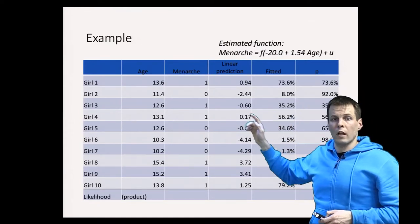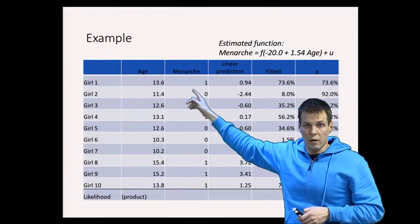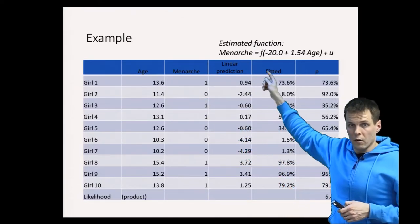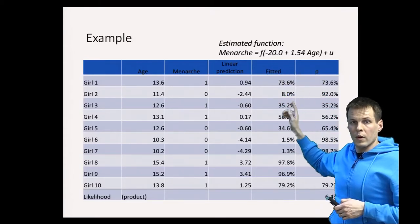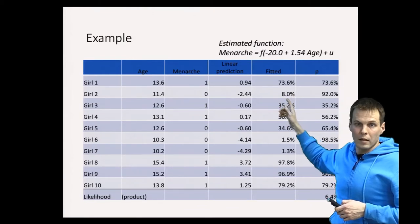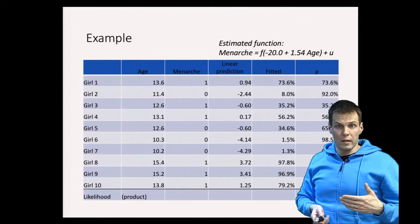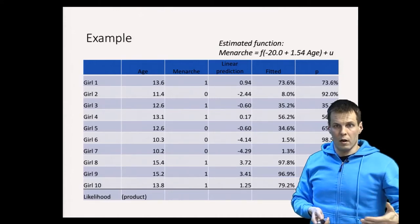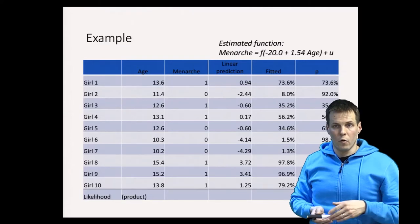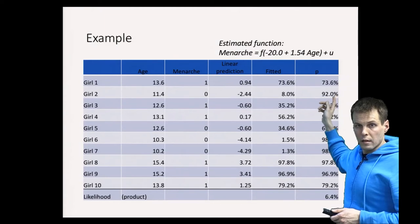Then we move on to the next girl. She's 11.4 years and has not had menarche. The linear prediction is minus 2.44, calculated using this equation. We apply the logistic function, which gives us 8 percent predicted probability. It's only 8 percent probable that this girl would have had menarche given her age, and she didn't. So the likelihood for this observation is 1 minus 8 percent, which is 92 percent.